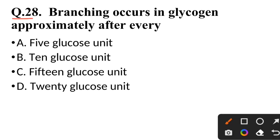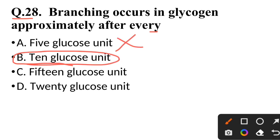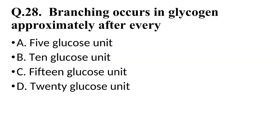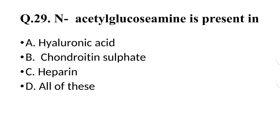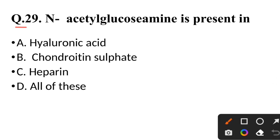Question 28: Branching occurs in glycogen approximately after — not 5 glucose units — correct answer is every 10 glucose units. Question 29: N-acetyl glucosamine is present in — correct answer is hyaluronic acid.